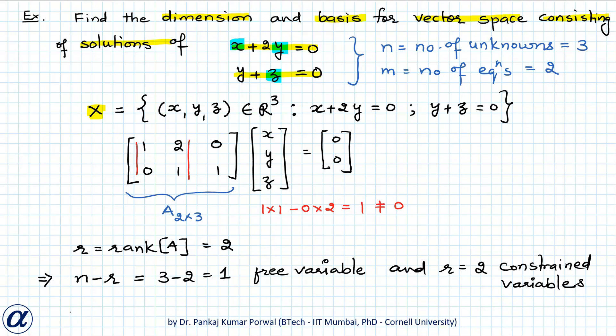So let's say I set z to be the free variable. So I can set z equals to any arbitrary real number, say alpha. Then I can solve for x and y in terms of alpha using our equations. So let's call this equation 1 and this equation 2. If I substitute z equals alpha in equation 2,